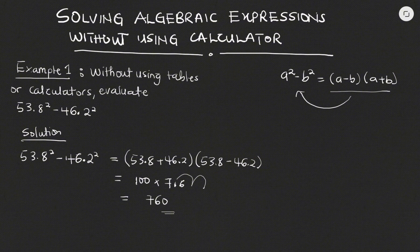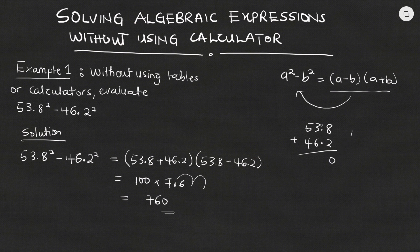So the first thing we did was to expand the expression as difference of two squares. We do our normal addition and subtraction of the content in the brackets, and then we do our normal multiplication on paper. So for instance, 53.8 plus 46.2: 8 plus 2 gives us 10, write zero carry one; 3 plus 6 gives us 9, plus 1 gives us 10, write zero carry one; then 5 plus 4 gives us 9 plus 1 gives us 10. So that is how we got 100.